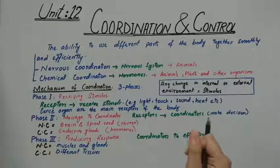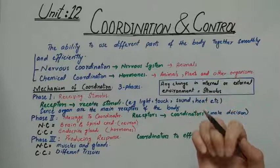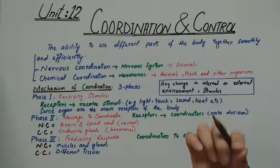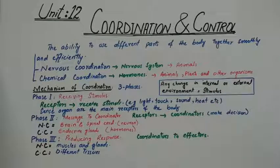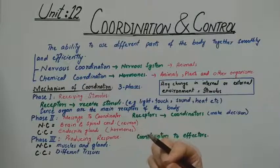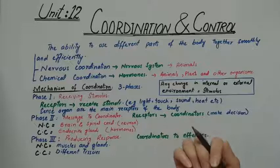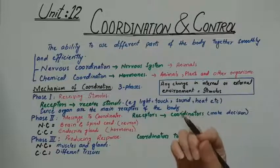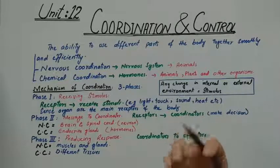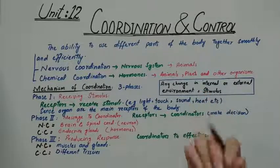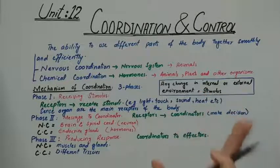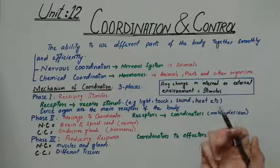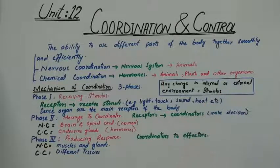For example: when the door of your house is knocked, you hear the sound of knocking. That sound is the stimulus. At this point, your ear acts as the receptor — receiving the stimulus in the form of sound and sending the message to your brain. The brain analyzes the information and sends a message to the muscles of your legs to move toward the door. The muscles respond by moving you to the door. Then signals are sent to the hand to open the door. This is a complete example of the coordination mechanism.